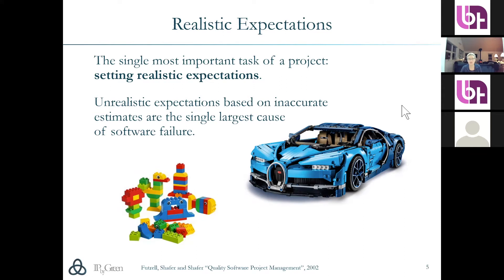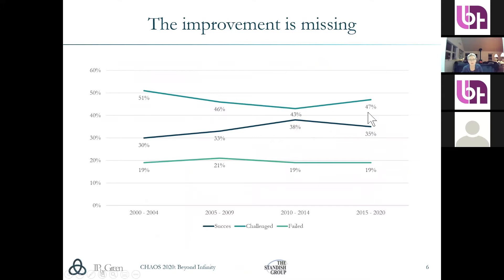Looking at data from the Standish Group CHAOS Report from 2020, we're actually seeing fewer successful projects in the period 2015 to 2020. We're quite stable on failed projects — those that never deliver anything — and we have 35% challenged projects, meaning they were not on time, not on schedule, and did not bring value as expected to the end users or the client. Even though we've changed a lot in how we work, we still have things to sort out.